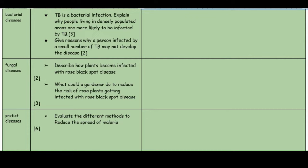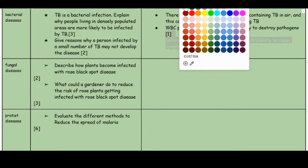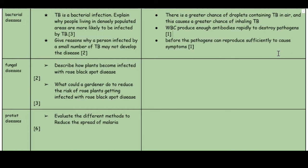Moving on to bacterial diseases: TB (tuberculosis) is a bacterial infection. Explain why people living in a densely populated area are more likely to be affected by TB. There is a greater chance of droplets containing TB being in the air because there are more people, and therefore a greater chance of inhaling TB. Also, a person infected by a small number of TB bacteria may not develop the disease because white blood cells produce enough antibodies to rapidly destroy pathogens before they can reproduce sufficiently to cause symptoms.